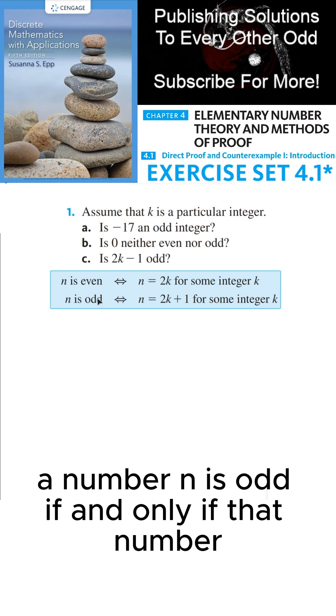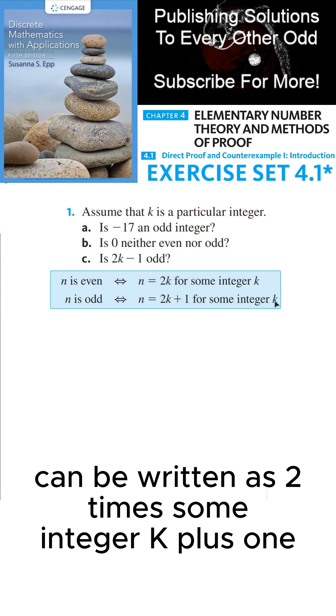A number n is odd if and only if that number can be written as 2 times some integer k plus 1.